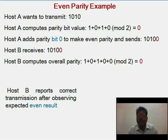Host B reports correct transmission after observing the expected even result. Whenever there is an error in the message, the parity will not match, and it is an indication that one of the bits from the message has been inverted.